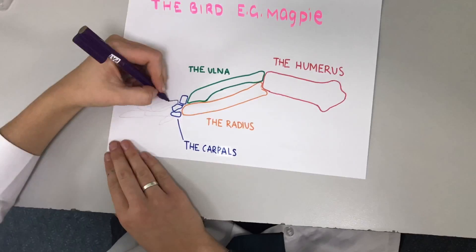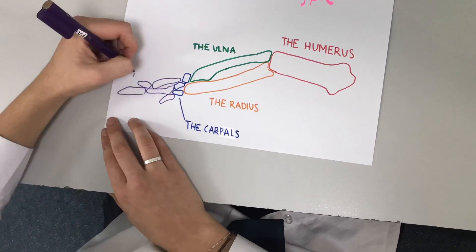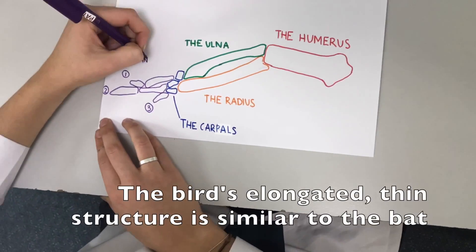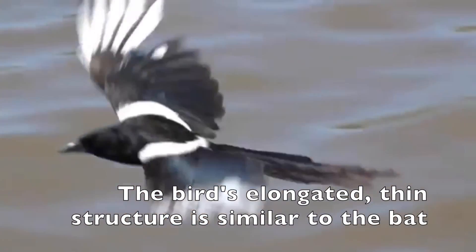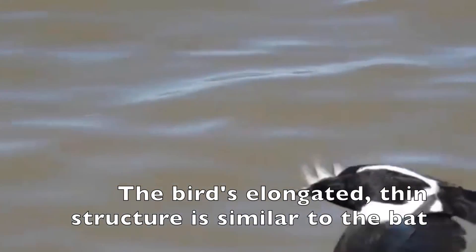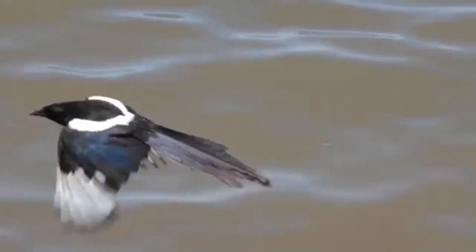Regardless, birds still have all of the other bones of the pentadactyl limb present. They are elongated and thin, and somewhat similar to the bat, as they support them whilst flying.